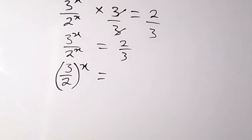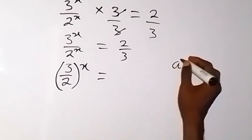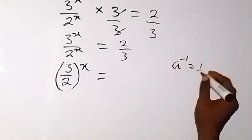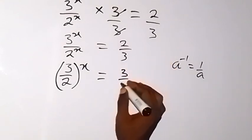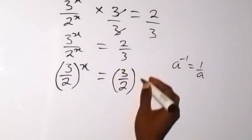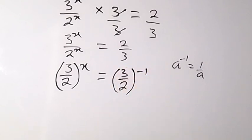And from one law of indices, negative power is a raised to power minus 1 will be 1 over a. So that is reciprocal power. If I change this one now, that will be 3 over 2 raised to power minus 1 because we have taken the reciprocal power.